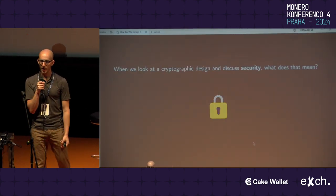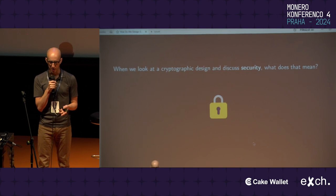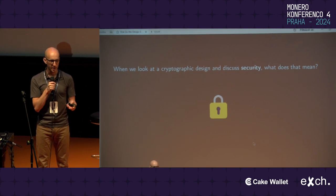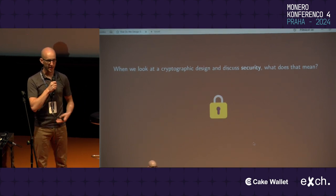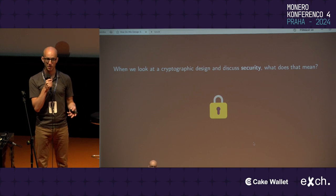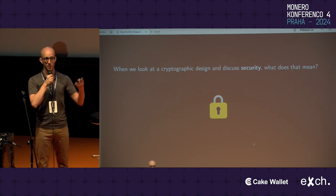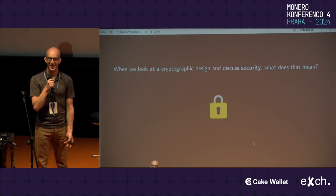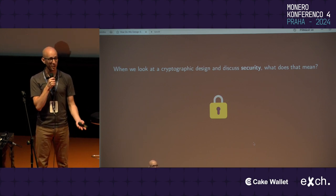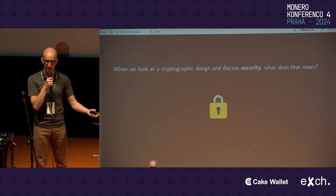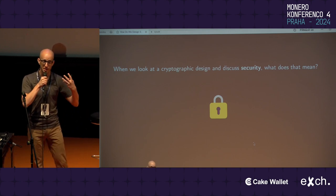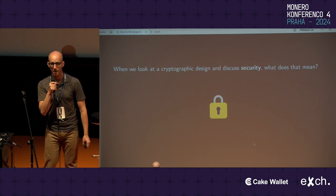When we look at cryptographic constructions — and there are many — we have signature schemes like CL-SAG and Monero, or Bulletproofs, Bulletproofs+, Bulletproofs++, that we use for things like range proving, or even things like transaction protocols like Seraphis from Monero, or Spark, which is a similar one that I worked on.